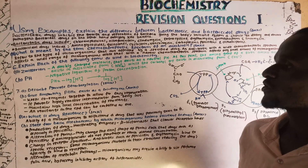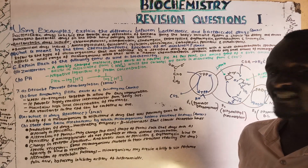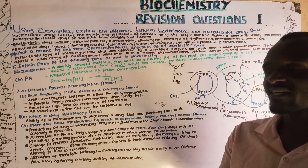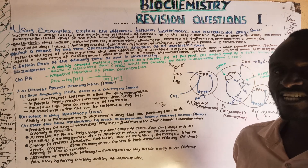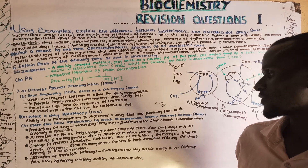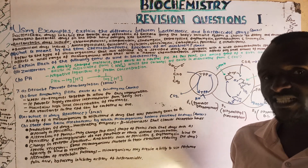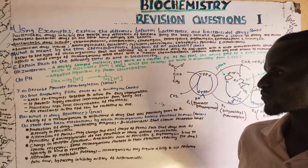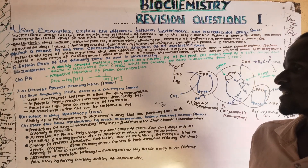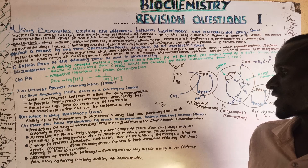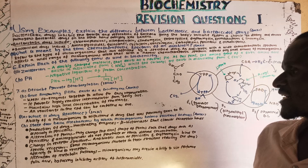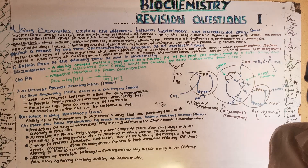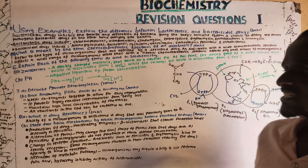Drug resistance refers to the ability of microorganisms to withstand a drug that was previously toxic to them. State four basic mechanisms by which microorganisms become resistant to drugs. Number one is by production of drug-inactivating enzymes. An example is beta-lactamase.